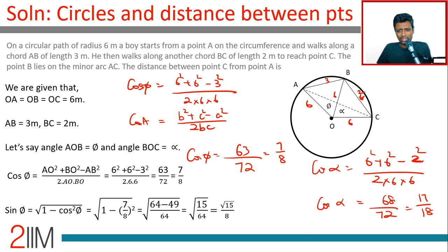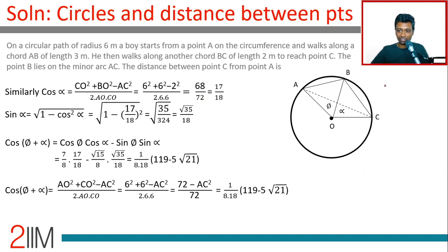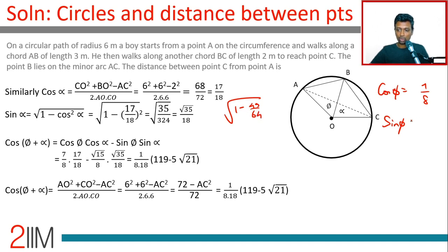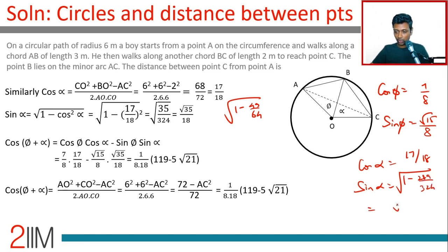Brilliant, so we found cos phi = 7/8 and cos alpha = 17/18. We need cos(phi + alpha) = cos phi · cos alpha − sin phi · sin alpha, so we need sin phi and sin alpha. Sin phi = √(1 − 49/64) = √15/8. Sin alpha = √(1 − 289/324) = √35/18.